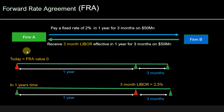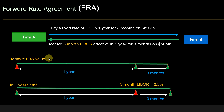Let's look at how you can value a forward rate agreement. Assume you are here — you just entered into the agreement today as Firm A. You entered into a forward rate agreement where you will exchange interest payments effective during a three-month period that starts in one year's time. On the day you enter into a forward rate agreement, the value of the FRA is zero. Similar to any other derivative, on the day you enter into a transaction the value is zero — it's a fair deal for both parties, Firm A and Firm B.